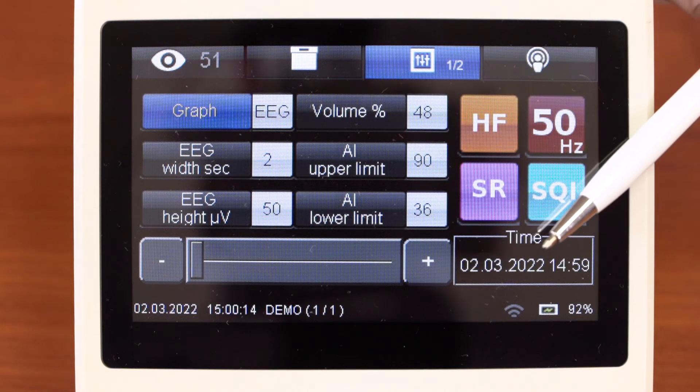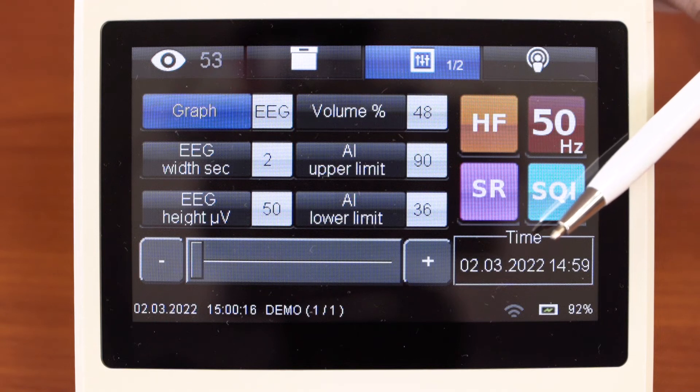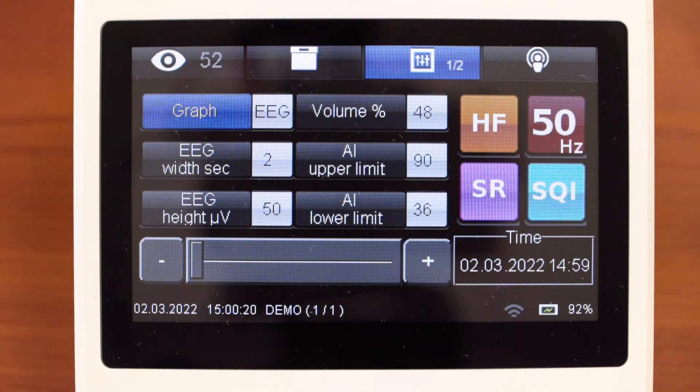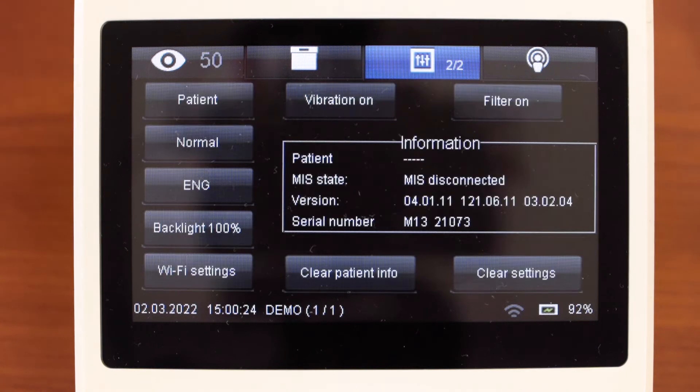Here you can set the date and time. Use plus and minus to change values. Press settings button again and you will see advanced settings.